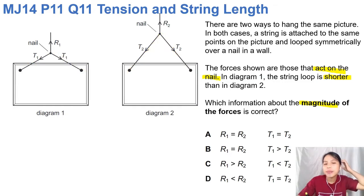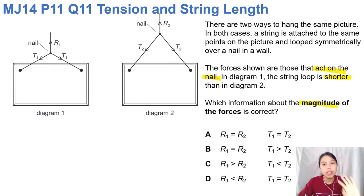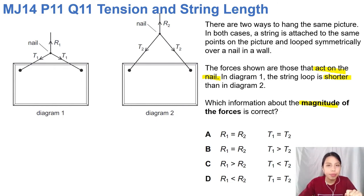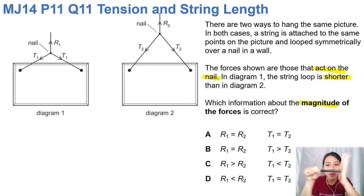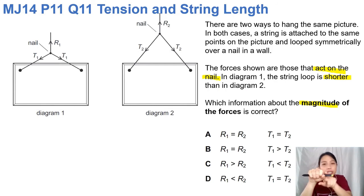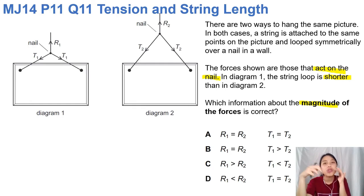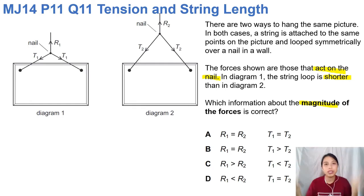What is R? R is the force from the wall on the nail that keeps the nail up. When you hammer a nail into the wall and hang the string on it, the wall keeps the nail up — that's the normal reaction force keeping that nail there and not just dropping down.